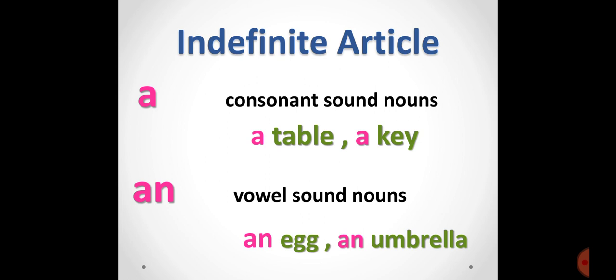If we are pointing at something that is singular and the first letter of that noun is a vowel, we use 'an' before the word. For example, 'egg' — the first letter is 'e', so since egg is singular and starts with a vowel, we use 'an egg.' The next word is 'umbrella' — the first letter of umbrella is 'u', and 'u' is a vowel. So what do we do? We use 'an umbrella.'